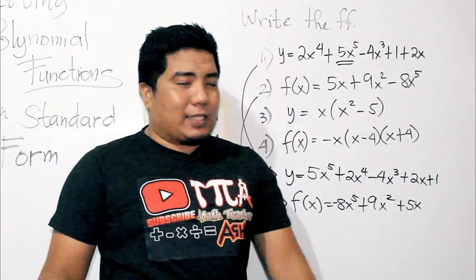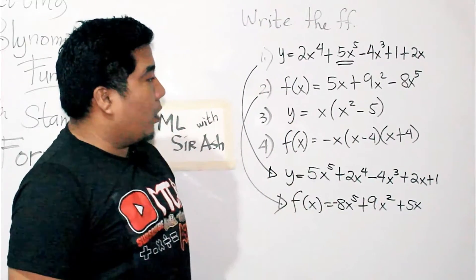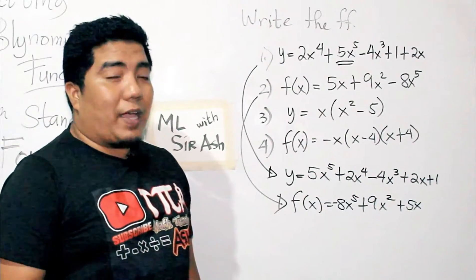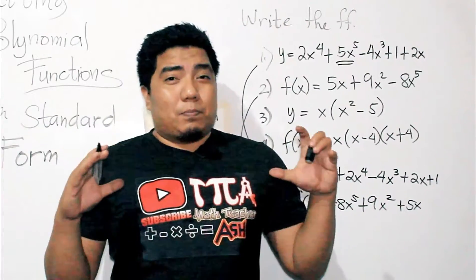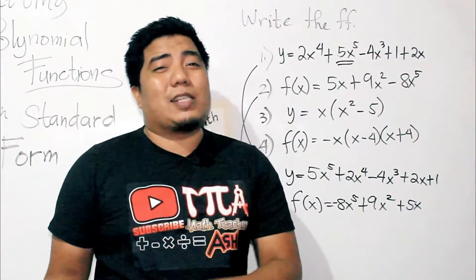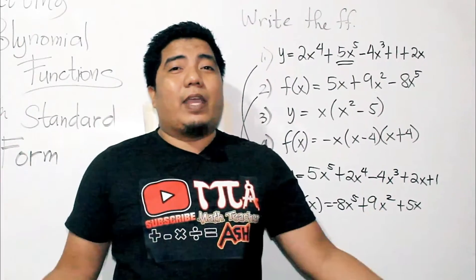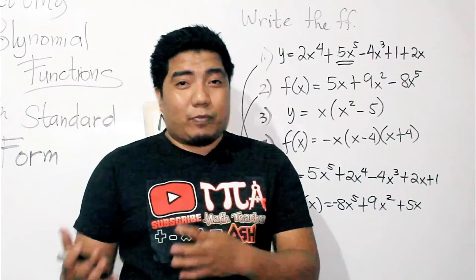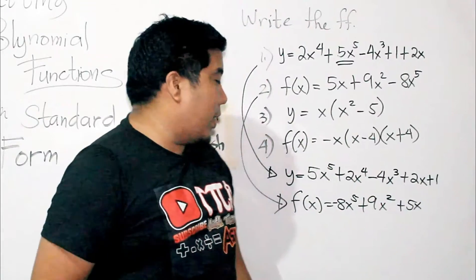Now, what if you have parenthesis? And that is our function number 3. y is equal to x times the quantity x squared minus 5. Basically, if you do encounter with parenthesis, what you need to do is you just apply the FOIL method or the distributive property. And then, after that, combine like terms and then arrange it to the standard form from the highest degree down to the lowest degree.